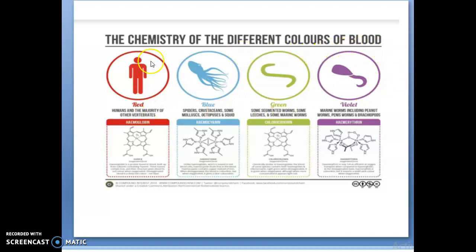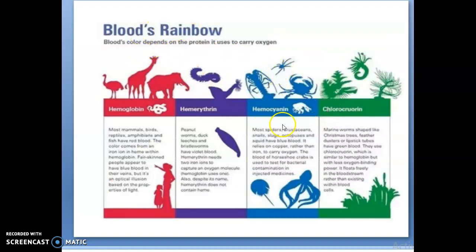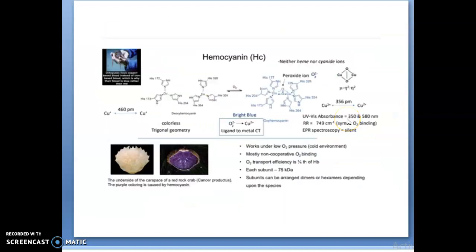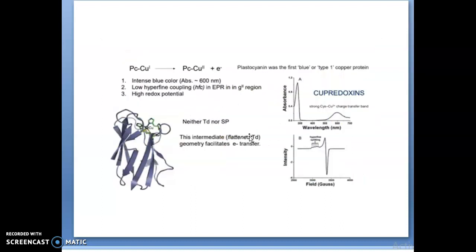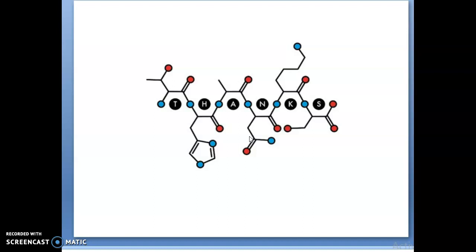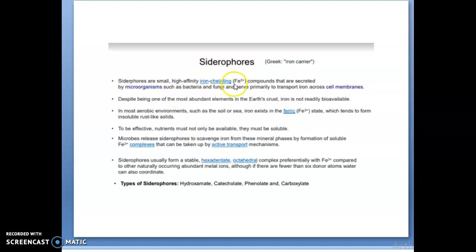The chemistry of different colors of blood — as mentioned in previous slides — shows red, blue, green, and violet colors corresponding to different proteins: hemoglobin, hemocyanin, and chlorocruorin, among others — a rainbow of blood. Finally, siderophores are iron carriers — small, high-affinity iron-chelating compounds.